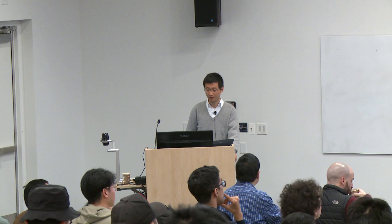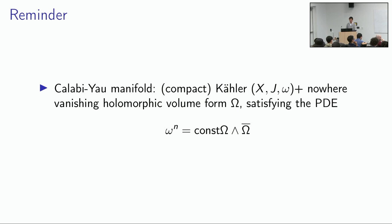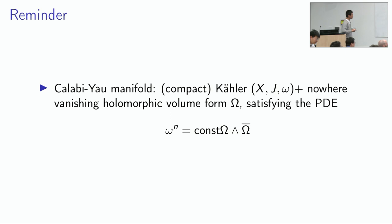The conjecture is about Calabi-Yau metrics near a certain limit. Let me briefly remind you what Calabi-Yau metrics are. Calabi-Yau manifolds are certain compact Kähler manifolds. The data of a Kähler manifold involves a complex manifold, where J stands for a complex structure which usually comes from algebraic geometry — you take some equations inside an ambient projective space and take the zero locus. You also have the data of a nowhere vanishing holomorphic volume form.